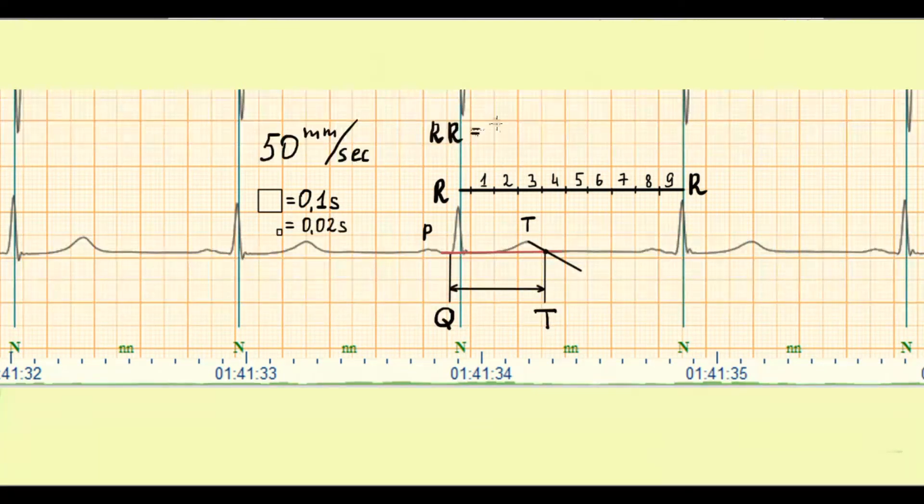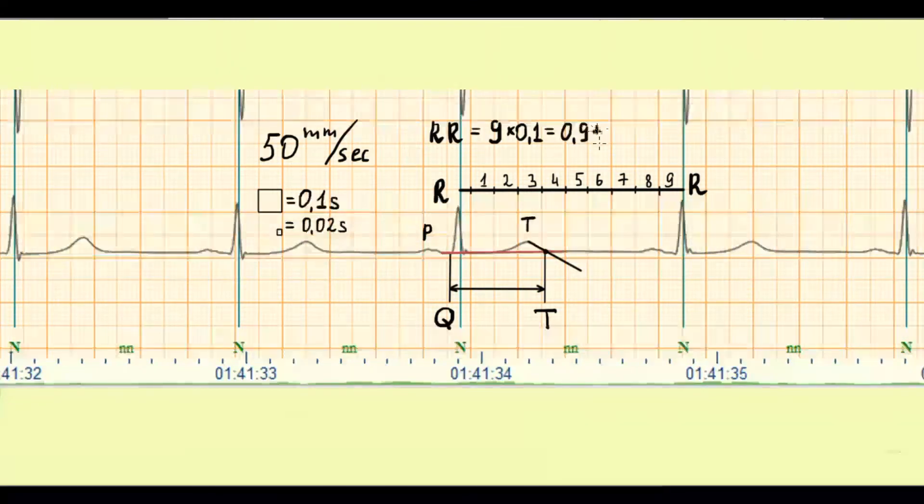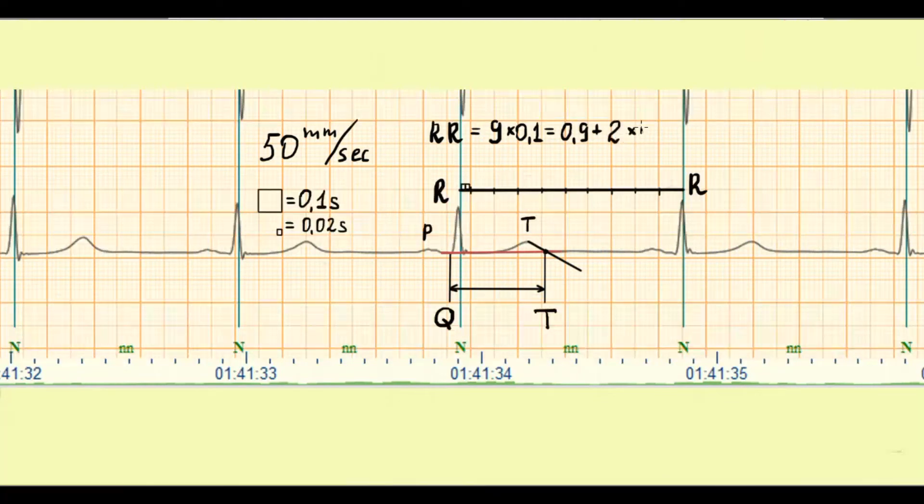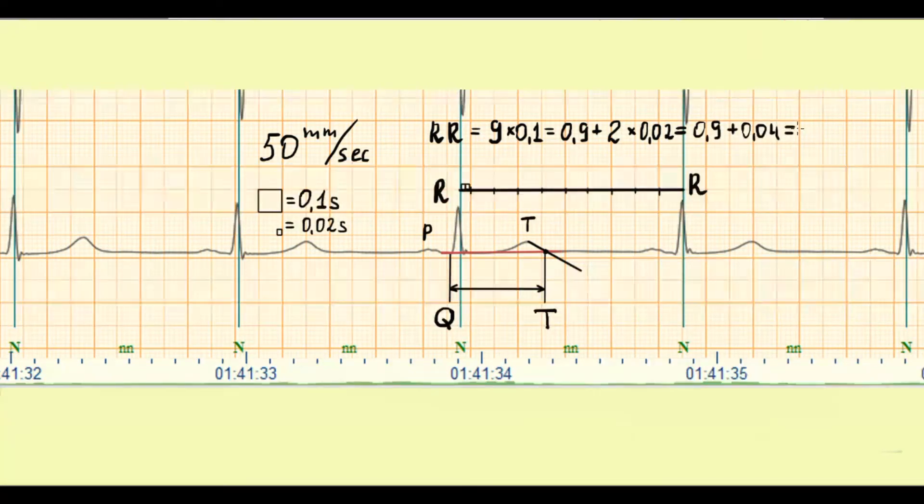RR interval is 9 large boxes and 2 small boxes. So, together is 0.94 seconds, or 940 ms.